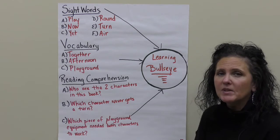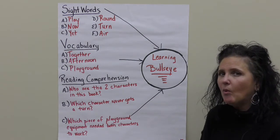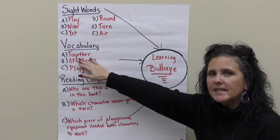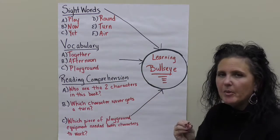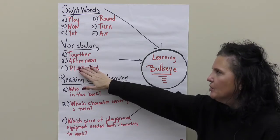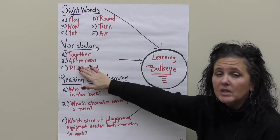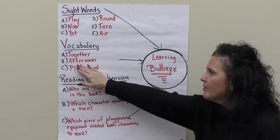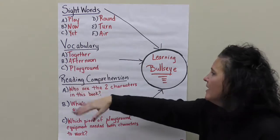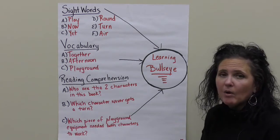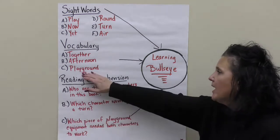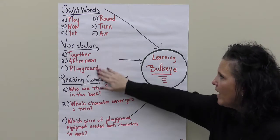Our vocabulary — some words we should know what they mean. If it said they played together, what does that mean? Together — two people come to the same spot and do the same thing, they're doing it together. And then another one would be afternoon. When were they playing? Was it early in the morning? Was it at dark? No, it was in the afternoon — that's when you have your lunch, usually when you're at school. And then playground — where were they playing? That's where the seesaw, the swing, and the slide were, just like at school. That's where you go at recess.